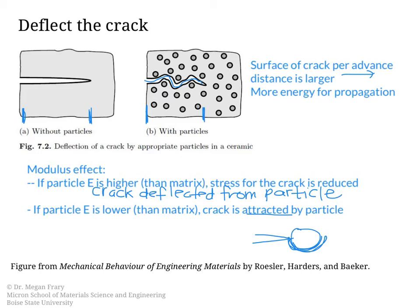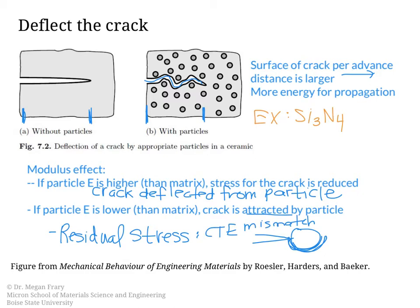Another effect of putting particles into the matrix is the residual stress effect. If there is a mismatch between the coefficient of thermal expansion of the particles and the matrix, you could get a residual stress effect where there's either a tensile or compressive stress built up as a result of the particles in the matrix. An example of a material toughened in this way is silicon nitride, where there are elongated beta phase grains in a glassy matrix, and those beta phase grains serve essentially as the particles to strengthen that material.